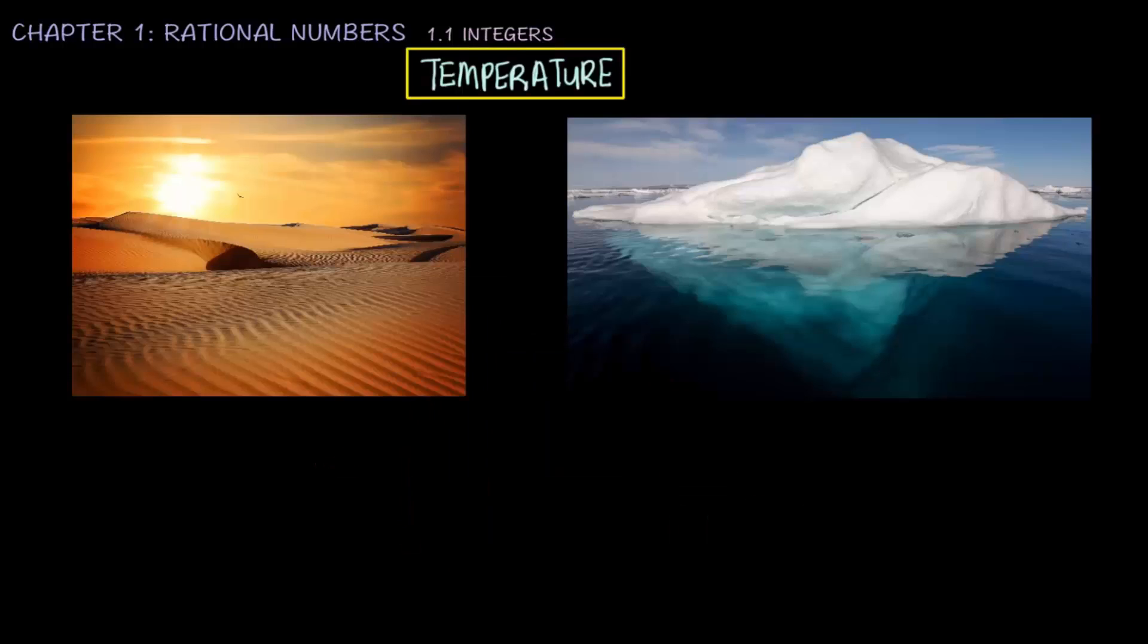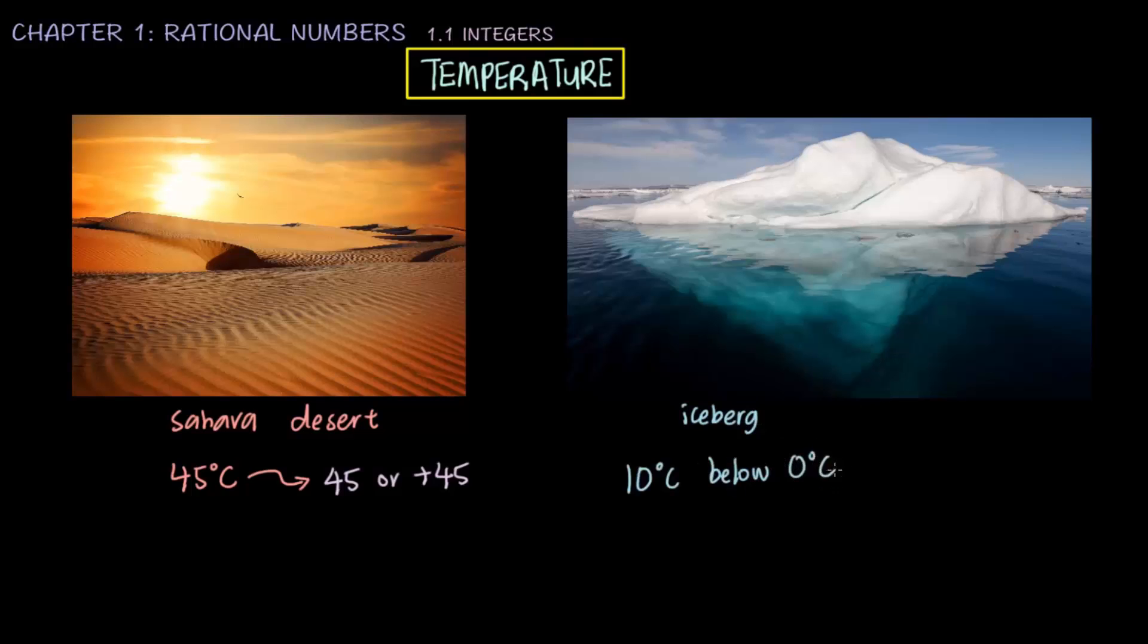Another example in our daily lives is temperature. For example, the temperature in the Sahara Desert is 45 degrees Celsius, or we can write it as 45 or plus 45. However, the temperature of an iceberg in the Arctic Ocean is 10 degrees Celsius below 0 degrees Celsius. Therefore, we can write it down as negative 10. Can you see the difference?